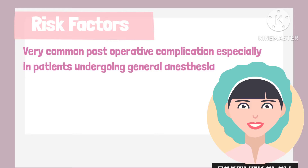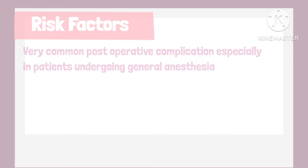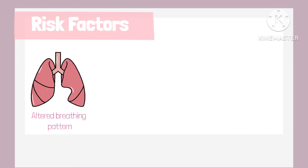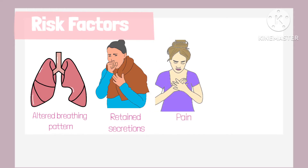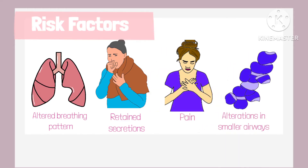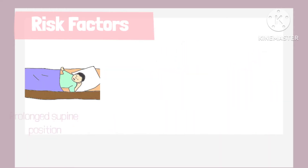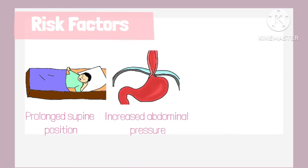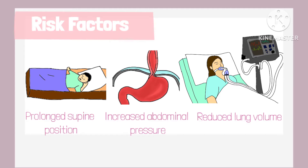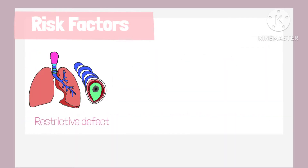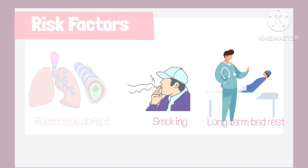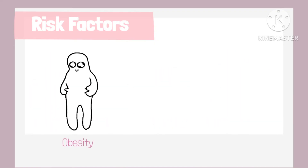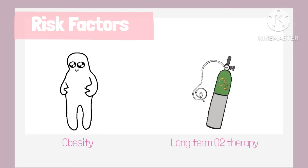Some other common risk factors associated with this disorder include altered breathing patterns, retained secretions, pain, alterations in small airway functions, prolonged supine positioning, increased abdominal pressure, reduced lung volumes due to musculoskeletal or neurological disorders, restrictive defects, smoking, long-term bed rest, obesity, and long-term oxygen therapy.